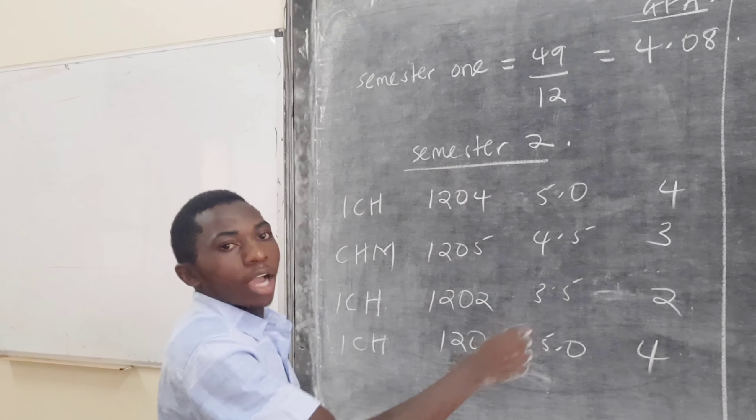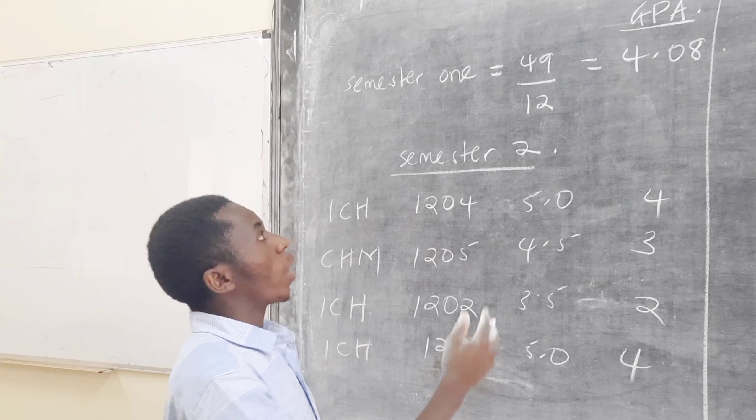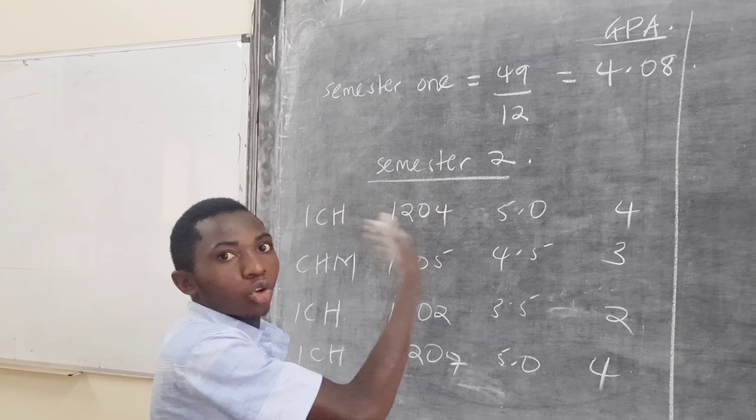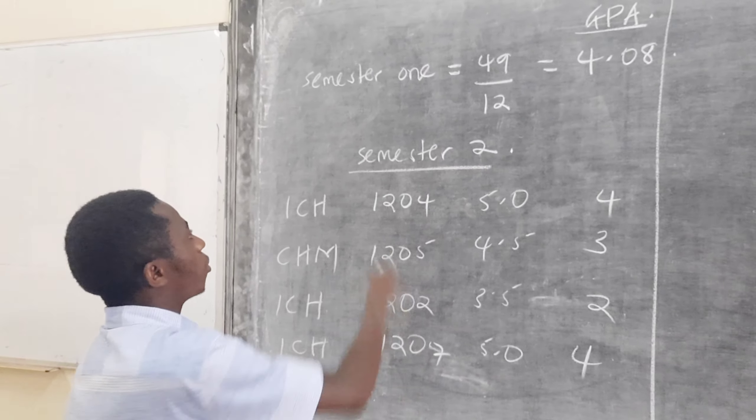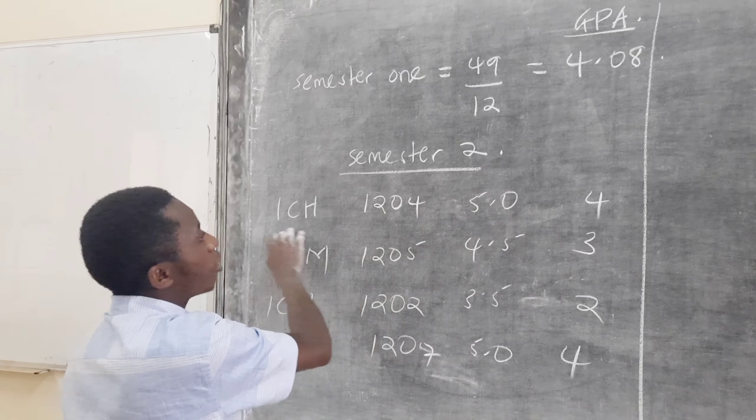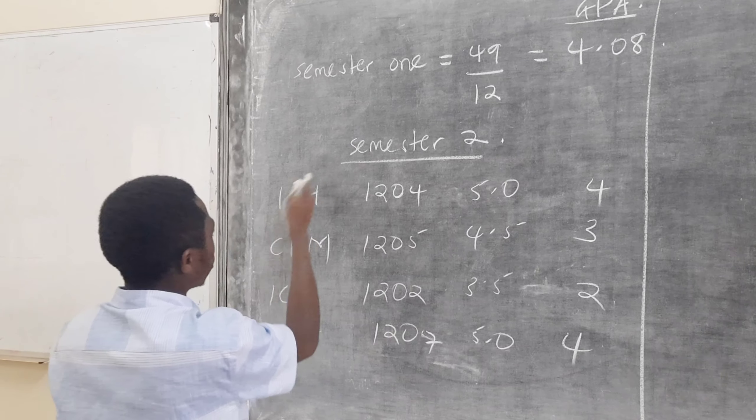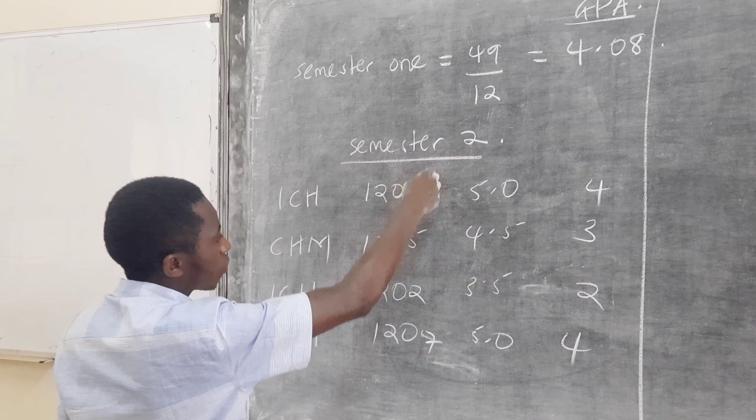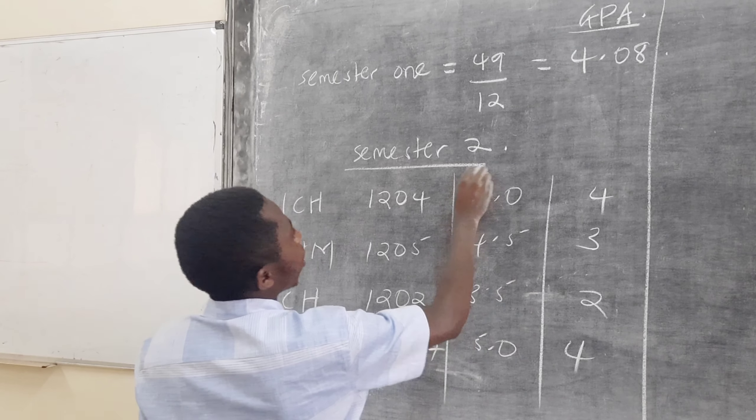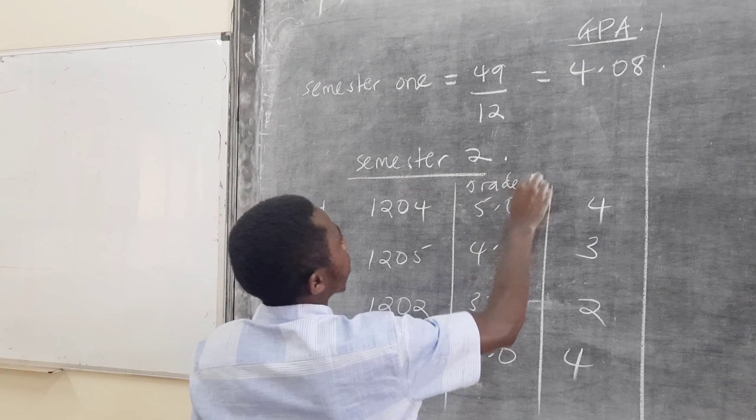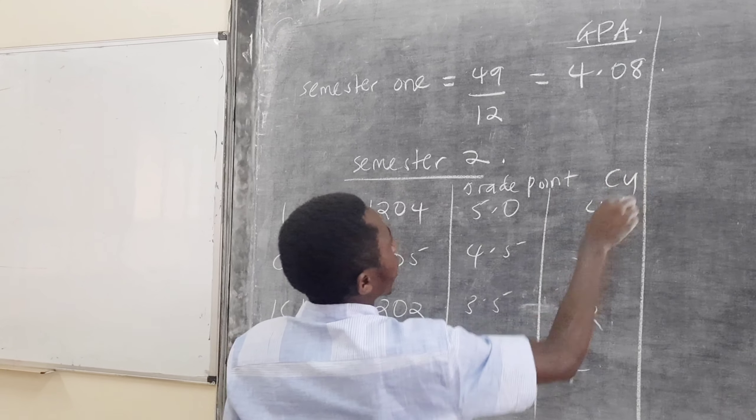Now, here comes semester 2. I told you that at a semester level, we have a GPA. But when you start combining the semesters, that's when you come up with a CGPA, which is the cumulative. Here comes semester 2, and you have these course units with these course scores corresponding to your grade point, corresponding to the CUs.